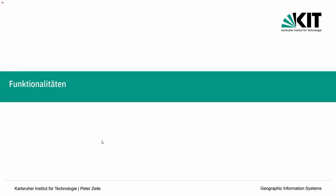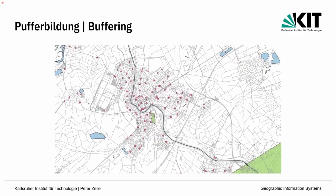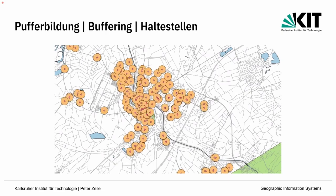Was kann man mit GIS funktional machen? Wir beginnen mit der Puffer-Bildung: Man hat einen Punkt, eine Linie oder eine Fläche und definiert einen Radius, um räumliche Informationen zu erhalten. Klassisches Beispiel: Bushaltestellen in Rastatt – man sagt, zeig mir den Einzugsradius von 300 Metern drumherum. So sieht man, welche Bereiche nicht gut abgedeckt sind. In Deutschland liegen 90 Prozent der Bushaltestellen in einem Radius von 600 Metern.